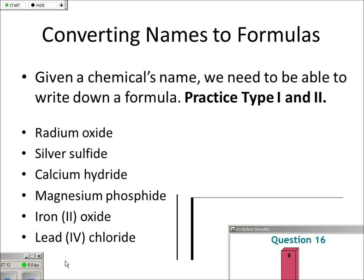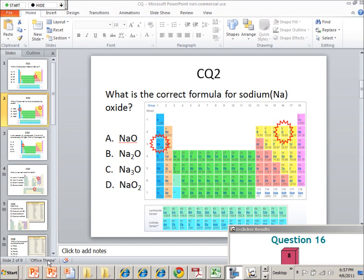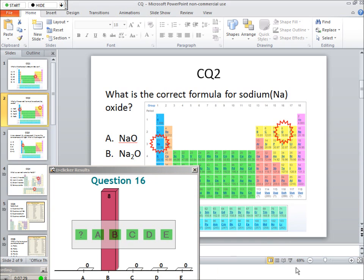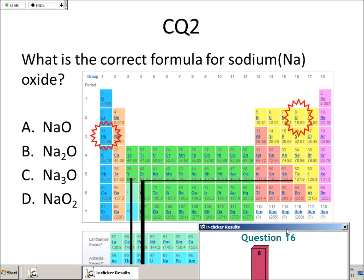Here's the periodic table. Radium is in the second column, so it's going to be plus 2. And oxide is two from the noble gas column, so it's going to need two electrons to complete its electron set to have the electronic configuration of neon, a noble gas. So oxygen is 2 minus — it's oxide. Radium is plus 2, oxygen is 2 minus, so radium oxide is just RaO. Done.